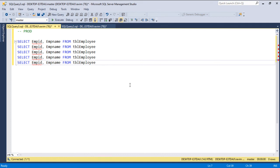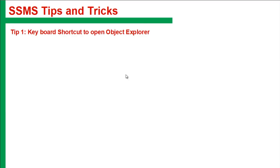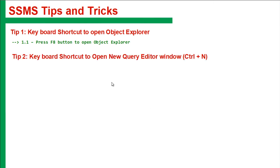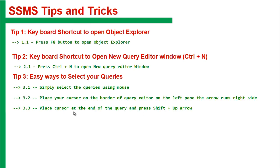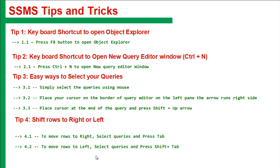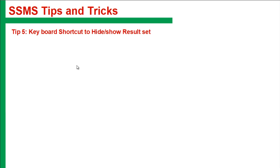Let's recap what we've learned in this session. First, to open the Object Explorer, press F8 or select it through the View menu. Second, to open a new query editor window, press CTRL+N. Third, the easy way to select queries is to go to the grey ribbon and select using the mouse pointer. Fourth, to indent rows right, select queries and press Tab; to move left, press SHIFT+TAB. Fifth, to hide or show the result set, press CTRL+R — press it again to toggle.